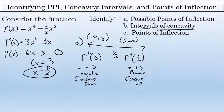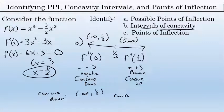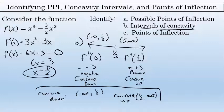To state the intervals of concavity: from negative infinity to 1 half, that's concave down. The graph is concave up from 1 half to infinity. The intervals of concavity for this function are concave down from negative infinity to 1 half and concave up from 1 half to infinity.